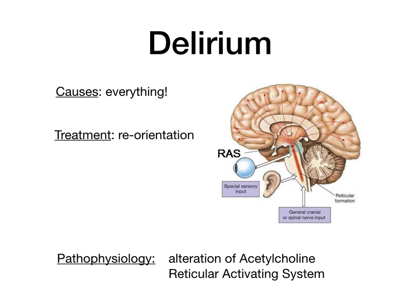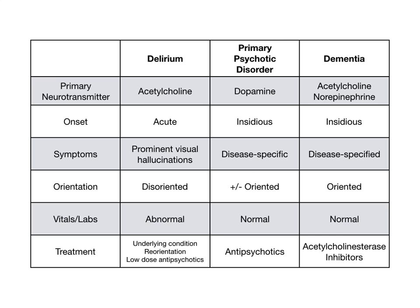That's delirium in a nutshell. This table is the high-yield bottom line. The point of this question was to make you think that not all that hallucinates and acts psychotic is dopamine — in many instances, it's going to be acetylcholine. I hope this question was helpful.